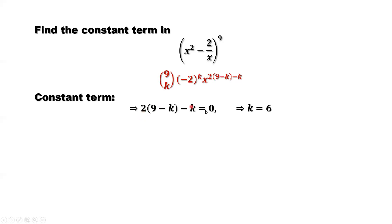Solve this condition. 2 times 9 minus k minus k equals 0. This implies k equals 6.